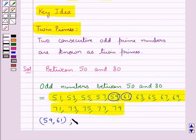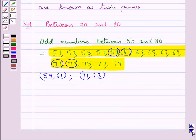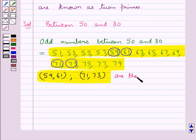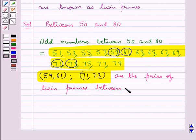Now let's look for another pair. Then we have 71, 73 is another pair of two consecutive odd prime numbers. So these two are the twin primes, or you can say the pairs of twin primes between 50 and 80.